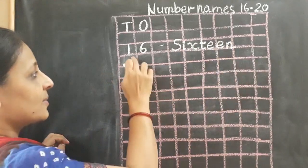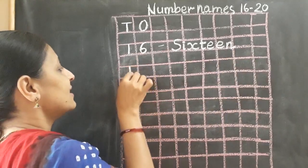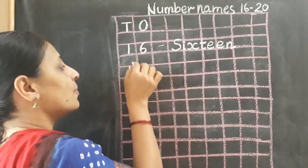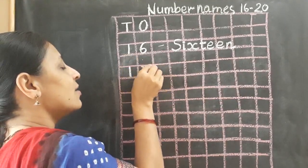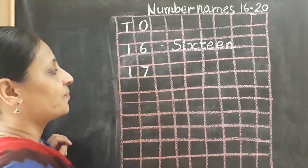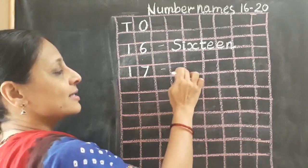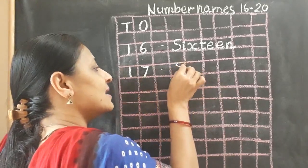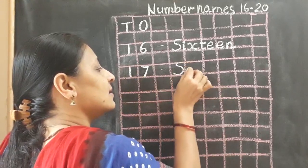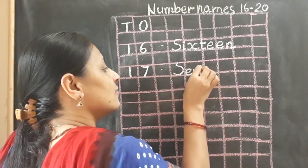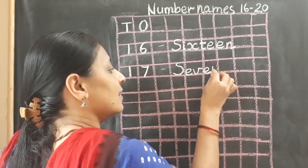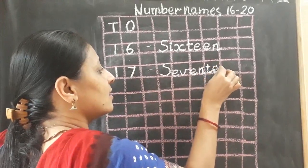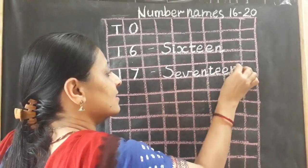Now what comes after 16? Yes, 17. So I will leave one box between numbers and write 17. Now I will write the spelling of 17. S, E, V, E, N, T, E, E, N. Seventeen.